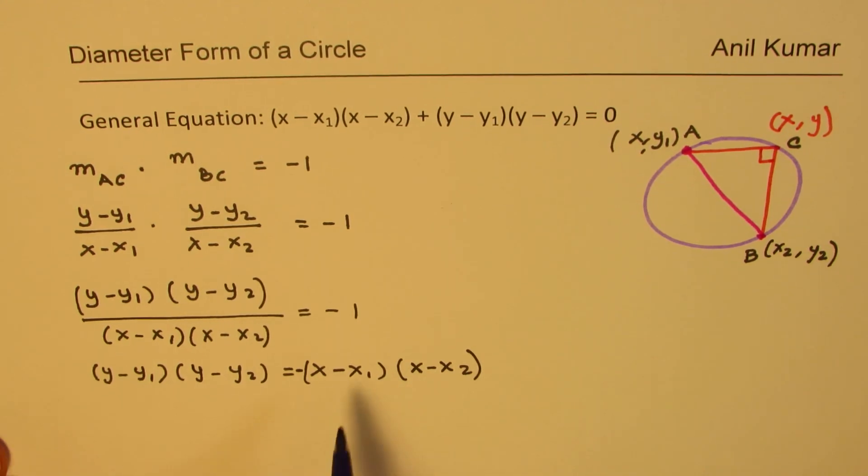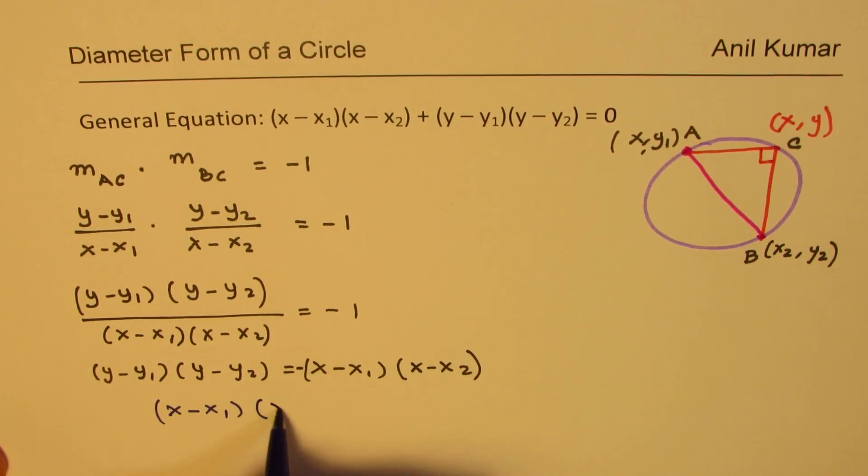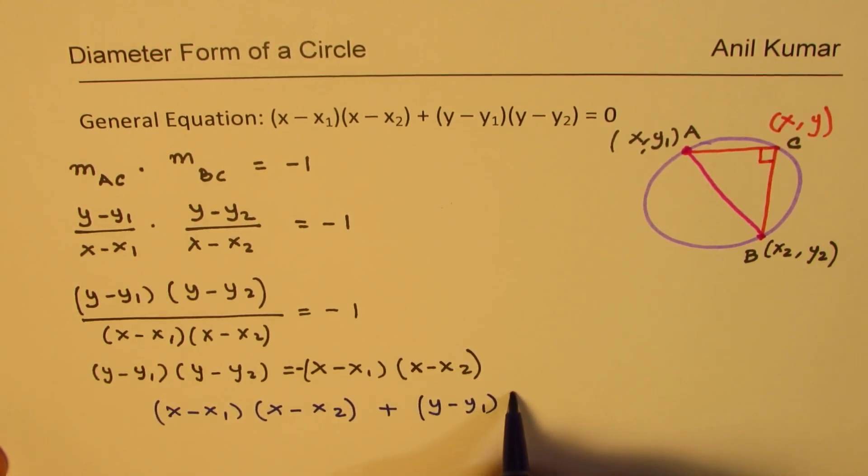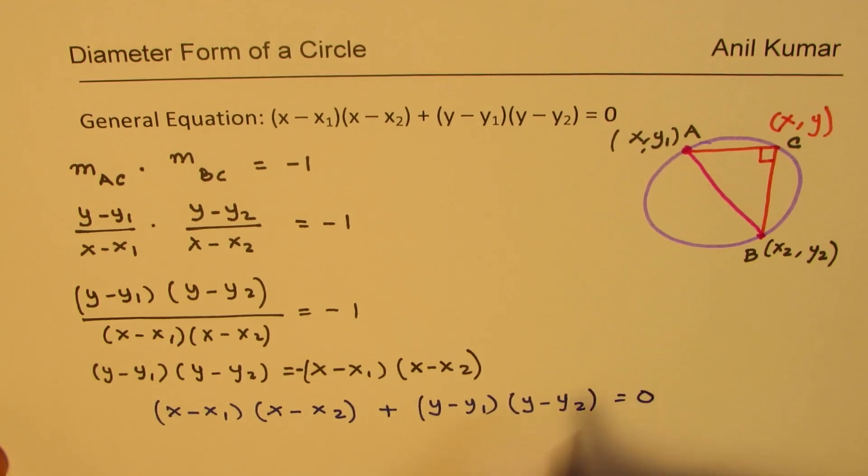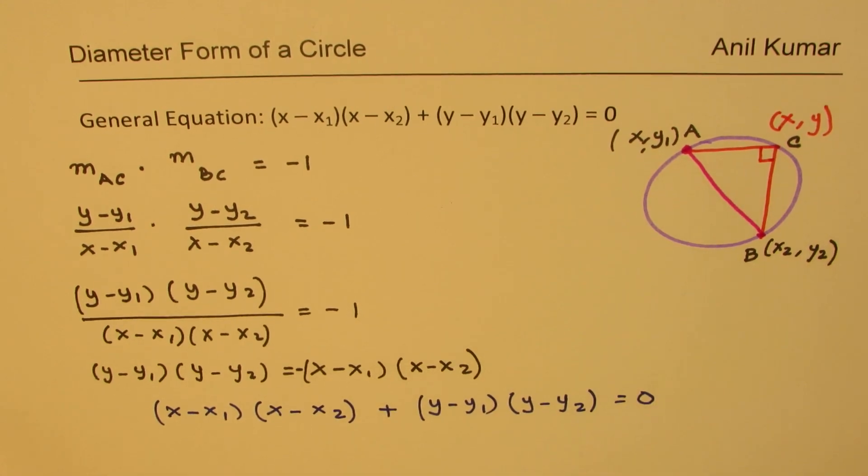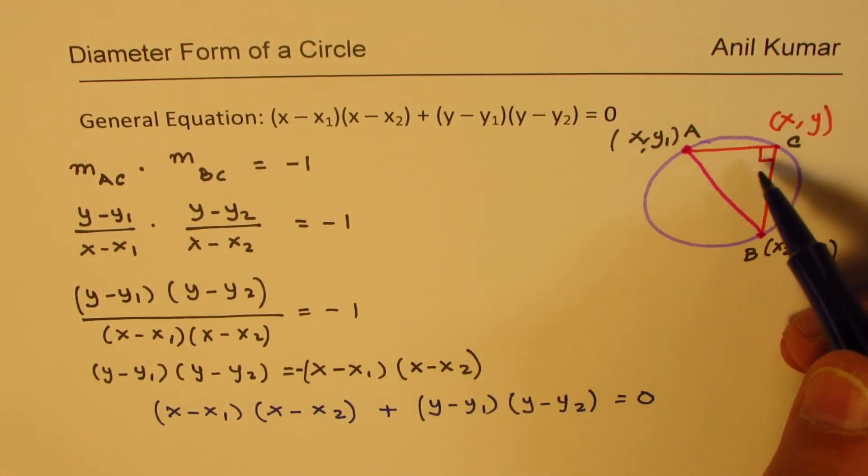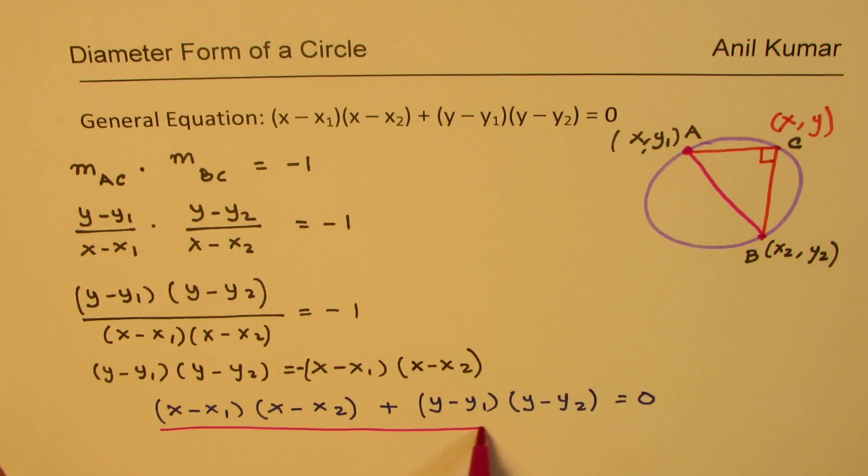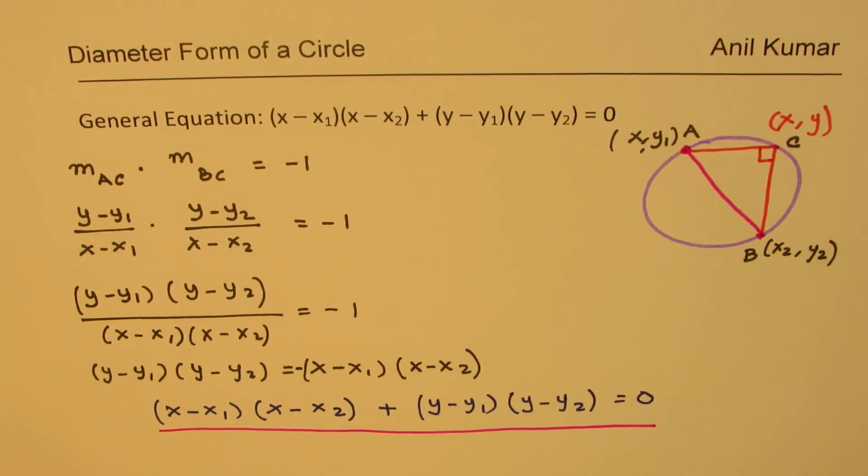Now bringing these terms to the right gives us the equation. Perfect. So basically we get our equation bringing these terms to the left side as (x minus x1) times (x minus x2) plus (y minus y1) times (y minus y2) equals to 0. So that becomes equation of a circle. As you can see as point C moves all along the circle there will be a triangle formed with right angles. So the slopes will be negative reciprocal of one another. So that always works. So that becomes our general equation for a circle given endpoints x1, y1 and x2, y2.